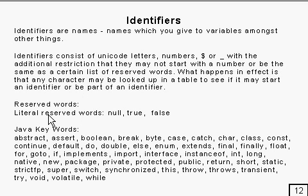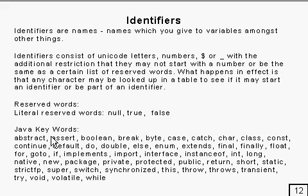There are two sets of reserved words: the literal reserved words, which are null, true, and false, and the Java keywords. We've seen some of these keywords already — byte, long, int, float, and so on — and there are a lot of others as well. So you can't have any of those as an identifier. You can't name your variable 'do', or 'double', or 'import', or anything like that, because the compiler will get very confused.